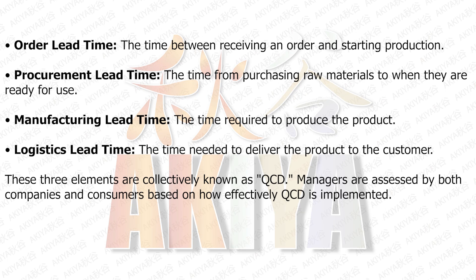Order lead time: the time between receiving an order and starting production. Procurement lead time: the time from purchasing raw materials to when they are ready for use. Manufacturing lead time: the time required to produce the product. Logistics lead time: the time needed to deliver the product to the customer. These elements are collectively known as QCD. Managers are assessed by both companies and consumers based on how effectively QCD is implemented.